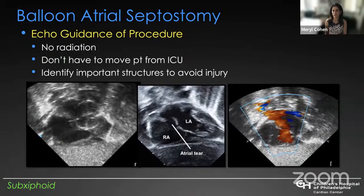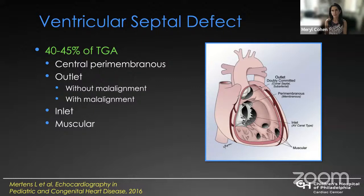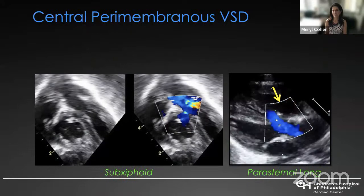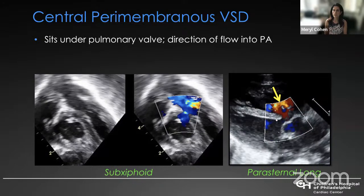You can help guide the catheterization doctor to ensure the balloon is not going across the mitral valve or into the left atrial appendage. You usually cause a tear in the septum primum, and then often will have a satisfying increase in pulse ox when you've done an appropriate balloon septostomy, confirmed by echo. Ventricular septal defects are quite common in transposition, accounting for almost half of cases. You can have any type of VSD in transposition — central perimembranous, outlet defects with or without malalignment, inlet defects, and muscular defects.